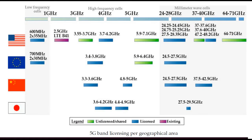5G is distributed across three frequency areas. First, low-frequency cells at 600 MHz and 700 MHz, somewhat similar to traditional GSM. Second, sub-6 GHz cells ranging from 2.5, 3.35, 3.55, 3.7 to 5.9 GHz in the USA, with similar bands in EU (3.4–5.9 GHz), China, and Japan. Third, millimeter-wave cells at very high frequencies: 24–28 GHz, 37–48 GHz, and 64–71 GHz.